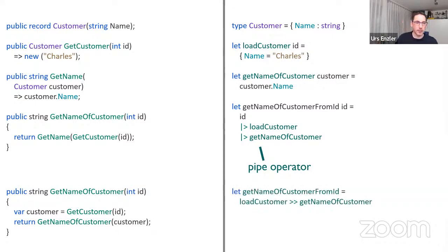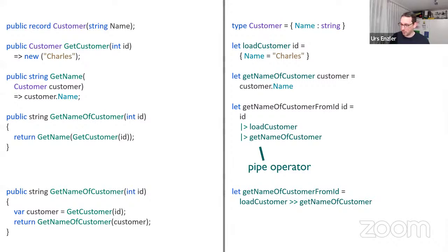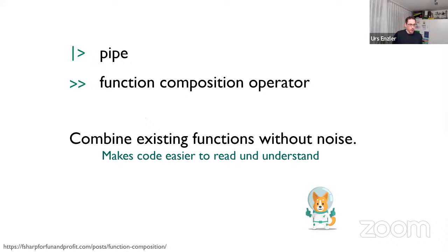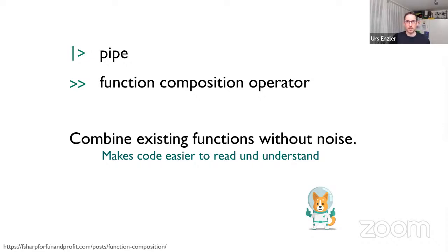For completeness, if you use getNameOfCustomerFromId a lot, you can define it as a composition of loadCustomer and getNameOfCustomer using the function composition operator. But in two years of writing F#, we've only used that operator maybe three times. The main point is that with the pipe and composition operators, it's really easy to combine existing functions into bigger ones — much easier than combining methods and classes, which always involves dealing with state.